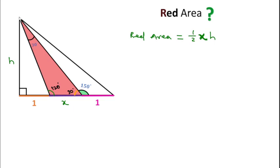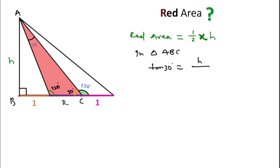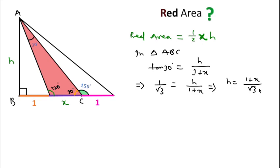In right angle triangle ABC, we can write: tan 30° = perpendicular / base, where perpendicular is h and base is (1 + x). Since tan 30° = 1/√3, we get 1/√3 = h/(1 + x), which gives us h = (1 + x)/√3.